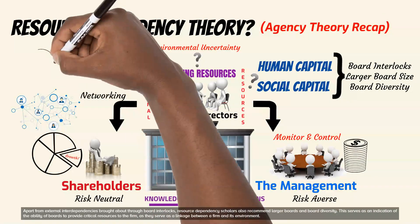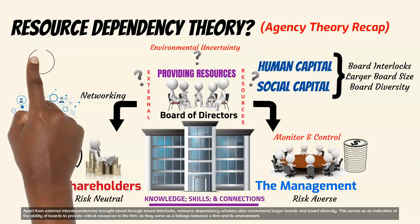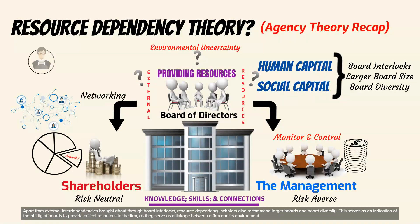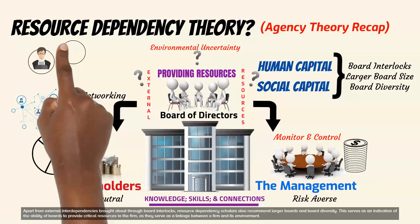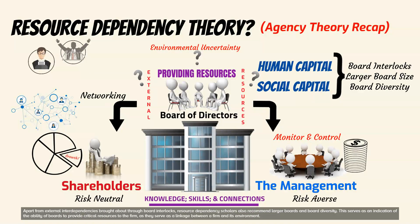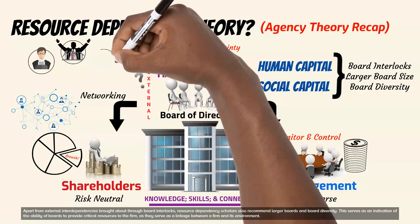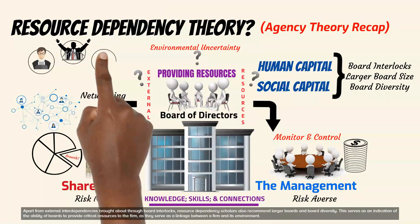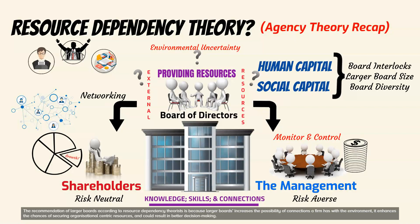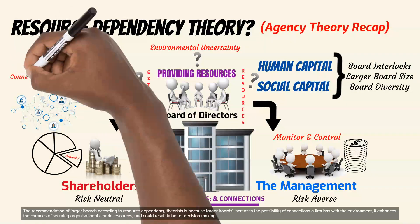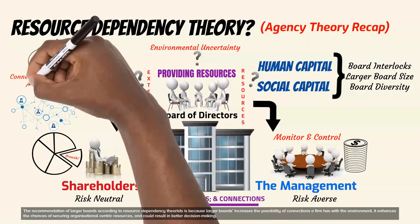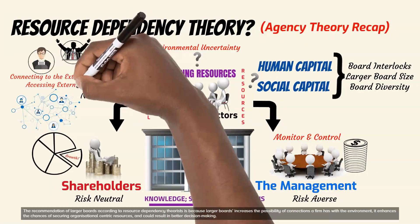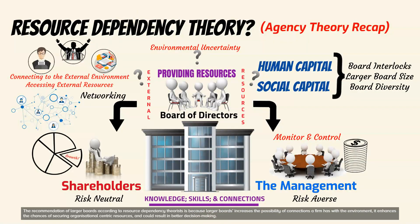Apart from external interdependencies brought about through board interlocks, resource dependency scholars also recommend larger boards and board diversity, as this serves as an indication of the ability of boards to provide critical resources to the firm and as a linkage between a firm and its environment. The recommendation of larger boards is because larger boards increase the possibility of connections a firm has with the environment, enhance the chances of securing organizational-centric resources, and could result in better decision-making.